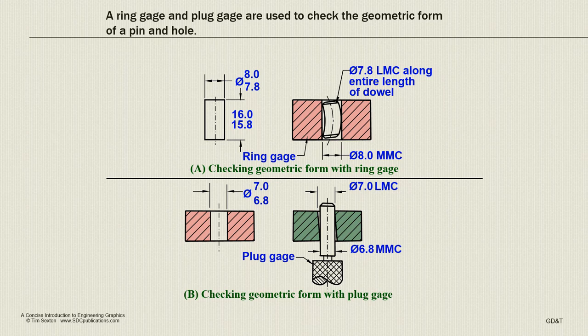So if we want to check for compliance, in the first one we have checking the geometric form with a ring gauge. So this is the ring gauge, basically it can be like a hockey puck with a hole in it, and the hole is in this case at maximum material condition 8.0. And if the part, the cylinder, is at its least material condition it can bend. If it's at its maximum material condition then it's going to have to be a perfect form. It's going to have to fit in there without any bend.